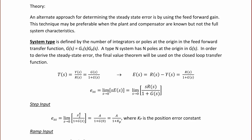So the steady-state error, or the limit as S approaches 0, is S·R(S) over 1 plus G(S). Now let's see what happens to this equation when we have a step, a ramp, and a parabolic input. When we have a step input, E(S) becomes the limit as S approaches 0 of S times A over S — because this is how we represent a step — over 1 plus G(S).